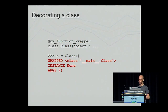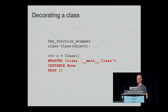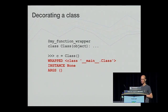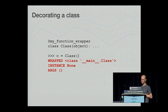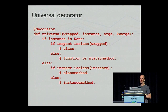We have one more situation to consider — where we want to decorate a class. In this case, the instance is still None, so from that we cannot distinguish it from a normal function. If we also look at the wrapped function, though, we will see that it is a class type, whereas it would be a function in the case of a normal function being called. So we luckily have a way to distinguish. This means we can now have the ability to create a universal decorator — that is, a decorator that can determine what it is wrapping.